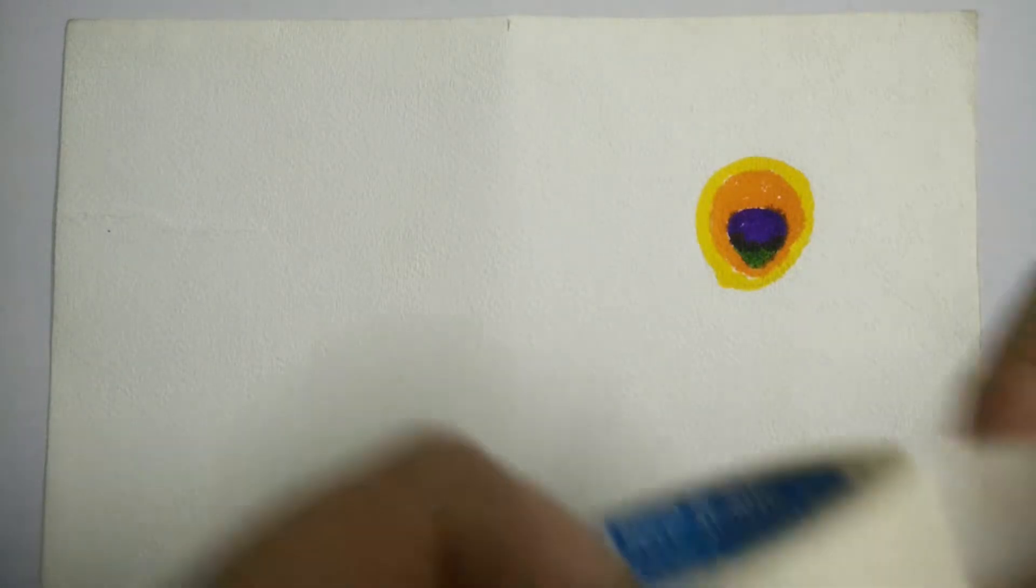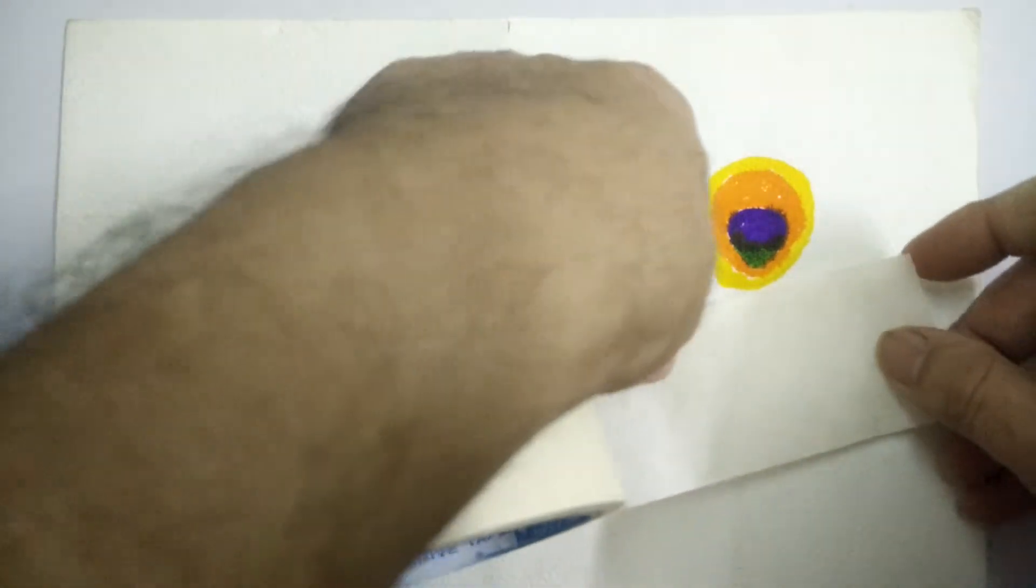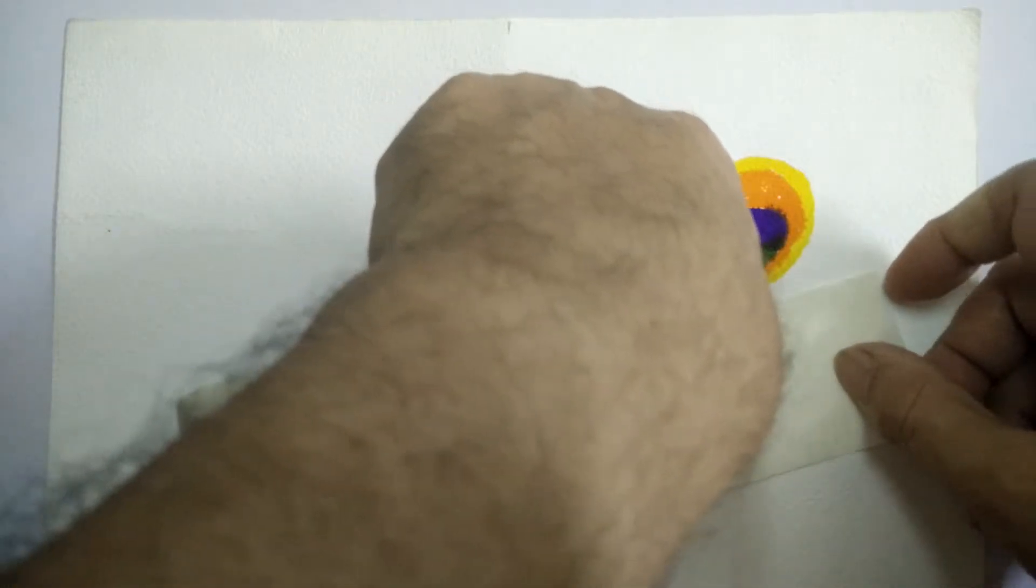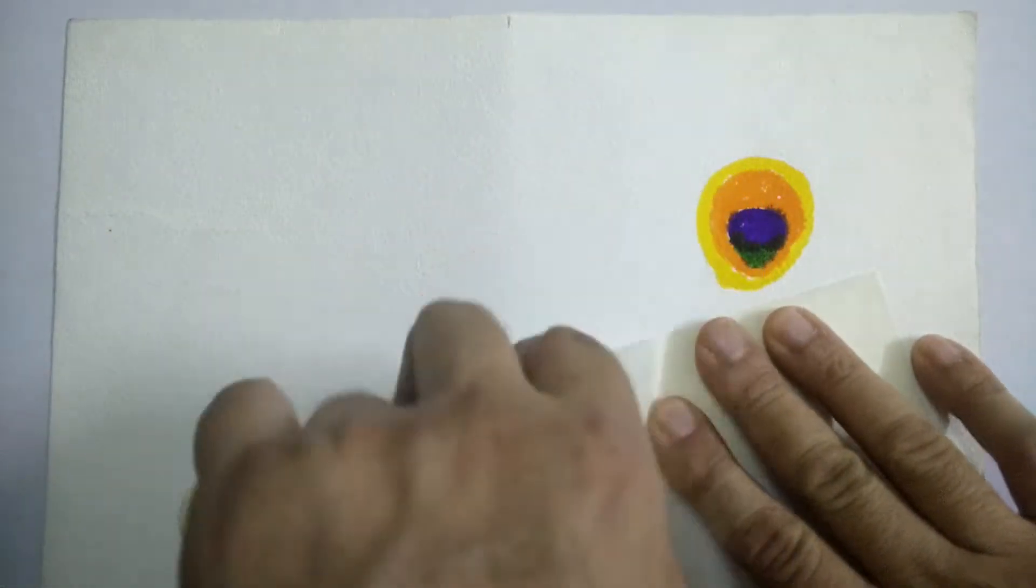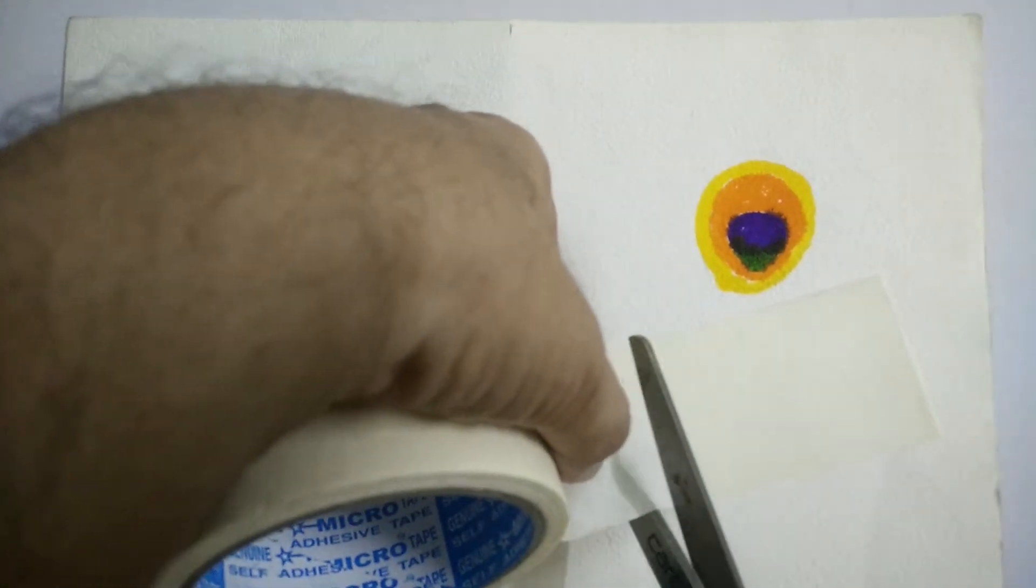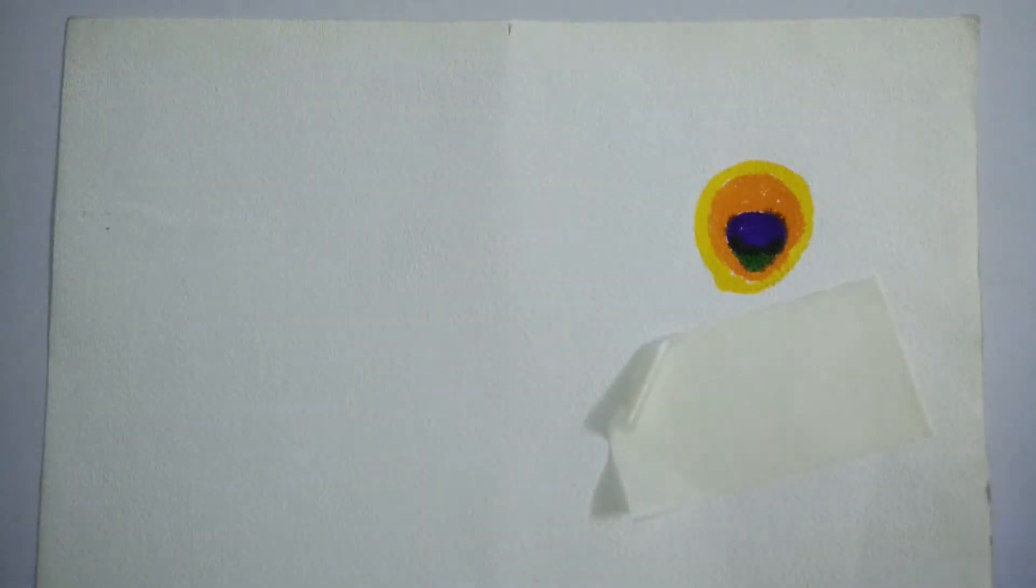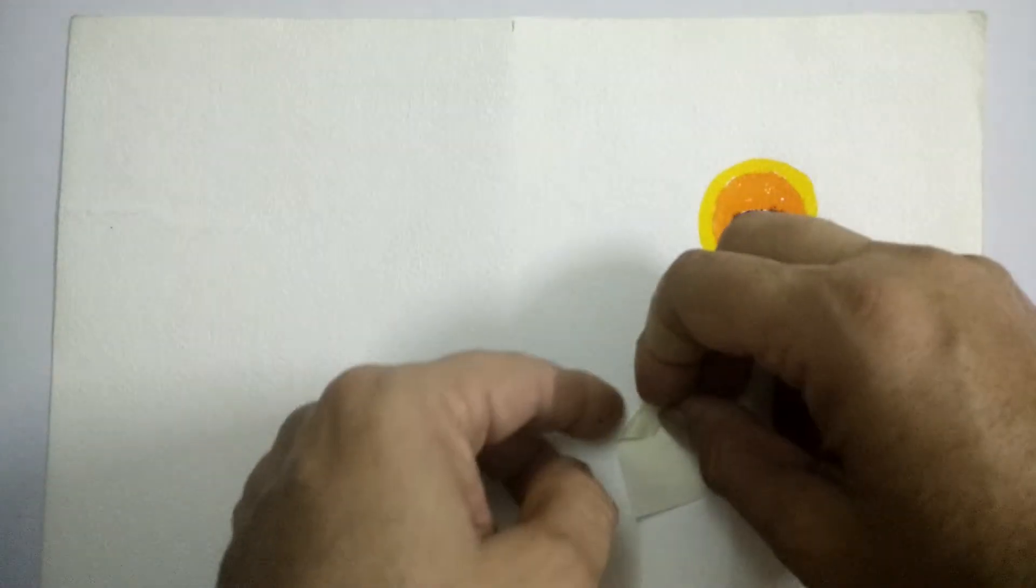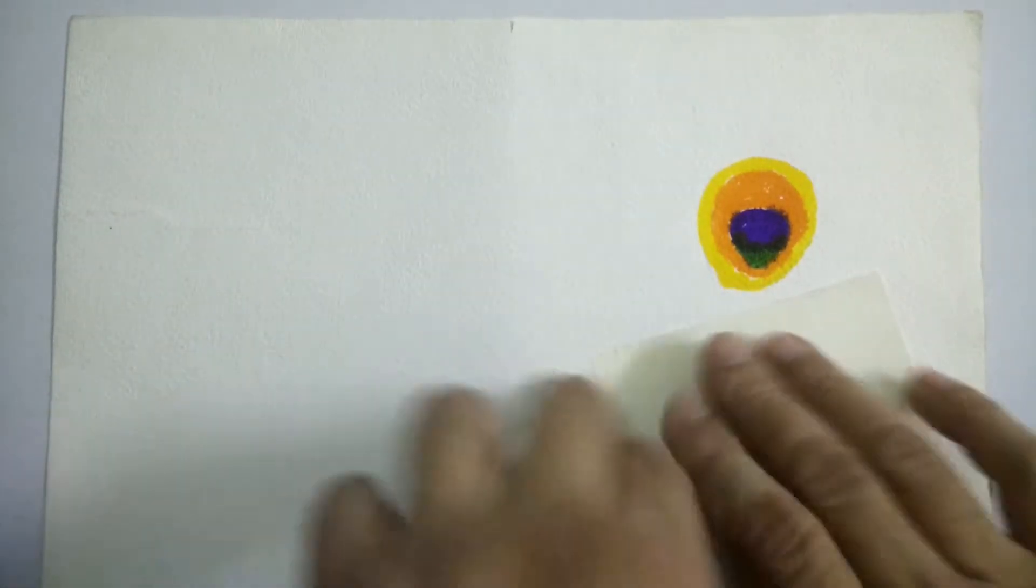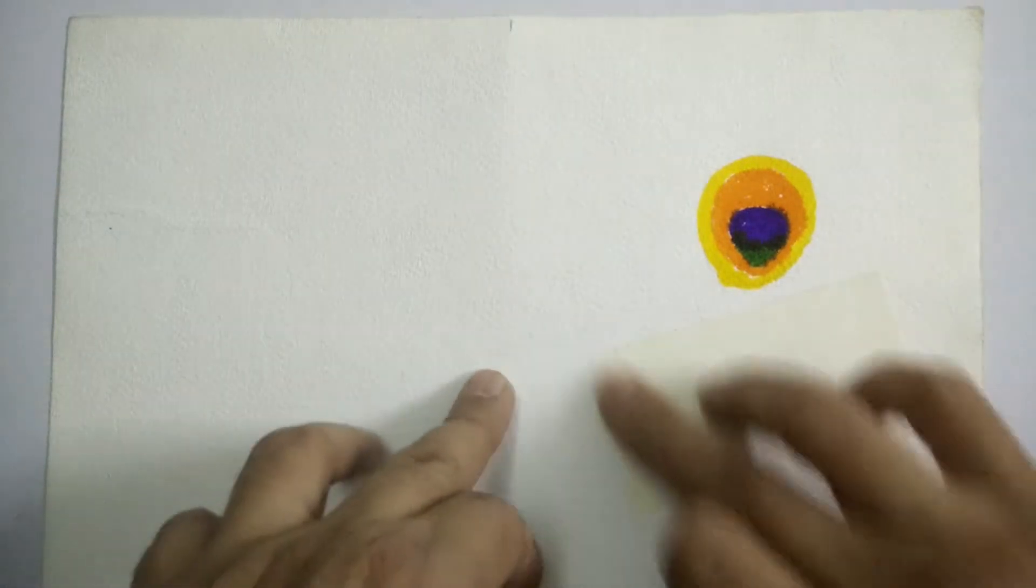Then, I take masking tape and rip off some portion of it and place it a little diagonal. And chop off the other end. And ensure that the tape adheres to the paper firmly from all sides.